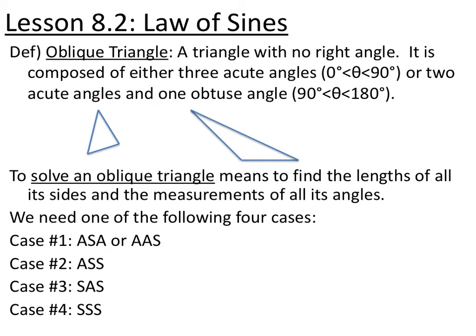Section 8.2 is the Law of Sines. Last section, 8.1, we talked about right triangle trig. Now we're going to talk about how to solve triangles that are not right triangles, or what we call oblique triangles. You have two options: either three acute angles, or two acute angles and one obtuse angle. Both are considered oblique triangles.